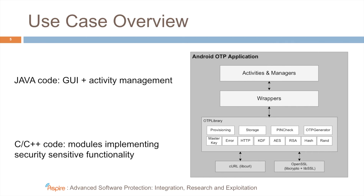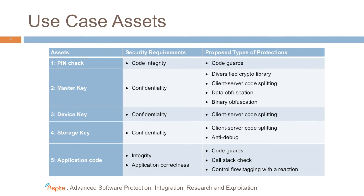It is the lower-level functionality — the dynamically linked library consisting of native code — that we need to protect with the Aspire protections. The assets to protect include the code performing the pin check, the master key (the common secret shared between the app and the server during the provisioning phase), the device key obtained from the server, the storage key used to store the counter and the device key securely, and of course the application code itself.